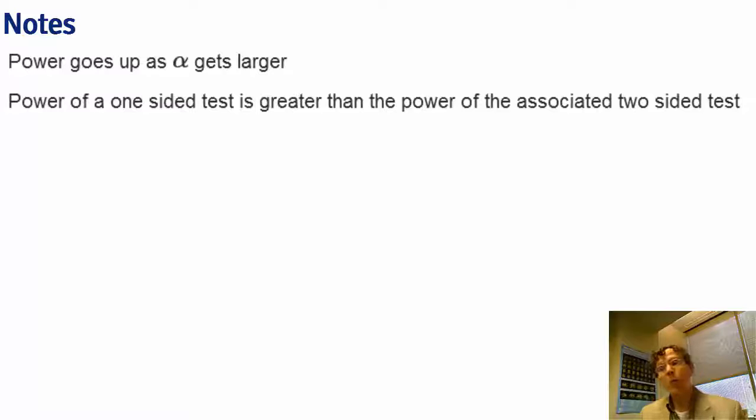So let's go through some basic rules about power. As alpha gets larger, our power gets larger. So the power of a one-sided test is greater than the power of the associated two-sided test, and we can see that by virtue of just dividing alpha by 2 in this bullet point above.